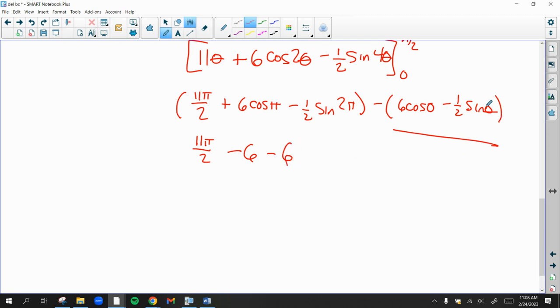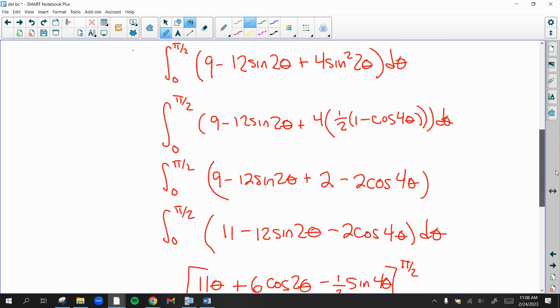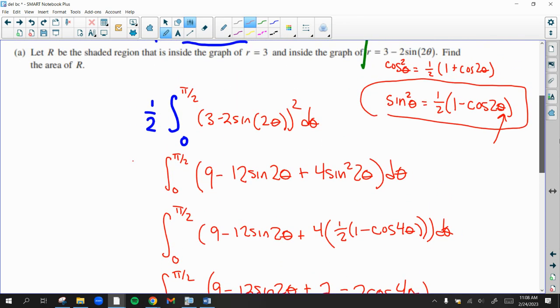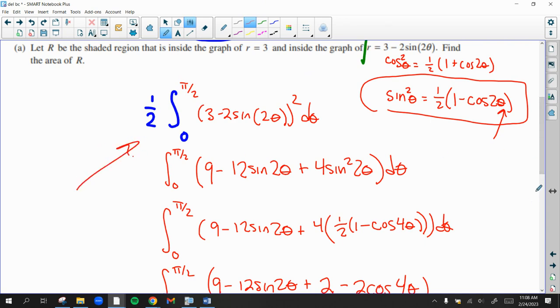Cosine of 0 is 1. So we have minus 6. And sine of 0. That's a 0, right? It looks like theta is 0. So it looks like this area is negative 12 plus 11 pi over 2.